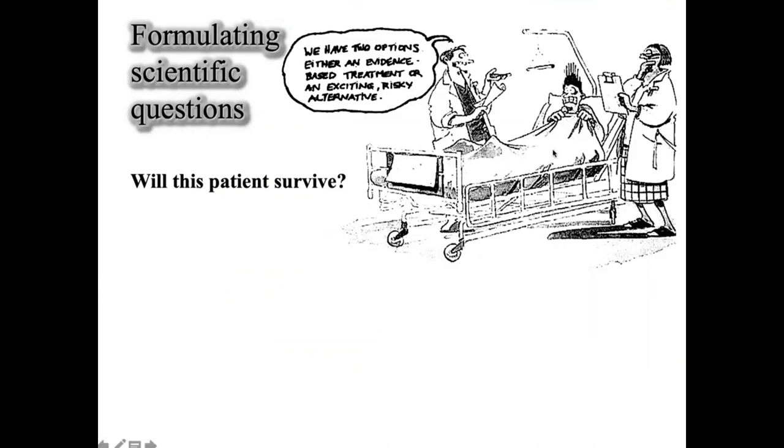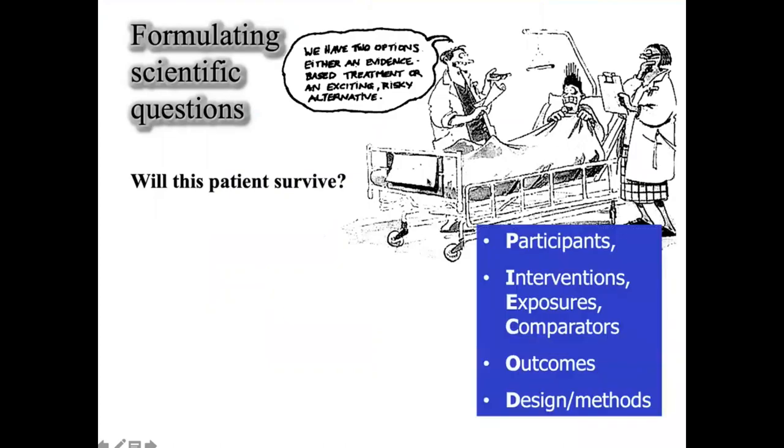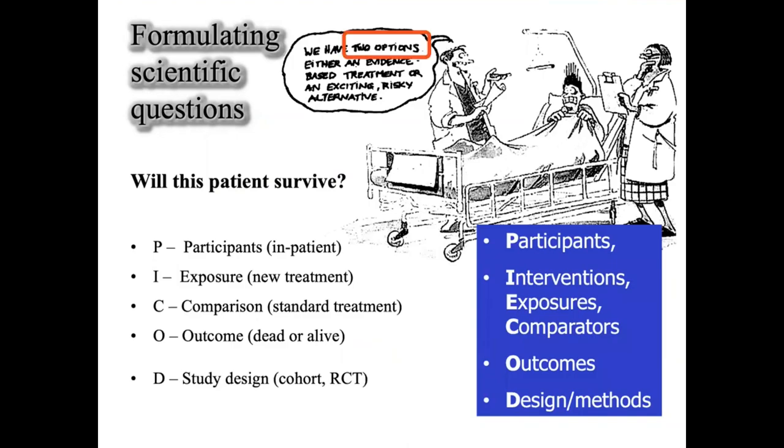A patient is going to go for surgery and you're going to offer them various options for their treatment. You may offer them the existing treatment or you may offer them a new alternative. In your research, so the existing treatment could be the standard therapy, the new treatment could be the new exposure or the intervention, and the participants are the people who have this type of problem leading them to be admitted to hospital. And after giving them either new treatment or standard therapy, if you follow them up to study their outcome...